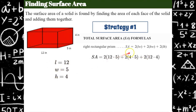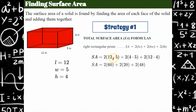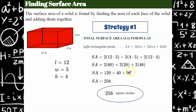I need length and width: 12 and 5. So 2 times 12 times 5, then 2 times height and width: 5 and 4, and 2 times length and height: 12 and 4. Now do the math. In the parentheses first: 12 times 5 is 60, 4 times 5 is 20, 12 times 4 is 48. Then multiply each product by 2: 2 times 60 is 120, 2 times 20 is 40, 2 times 48 is 96. Add them all together and I get 256. When talking about area, it's always square units — so 256 square inches.